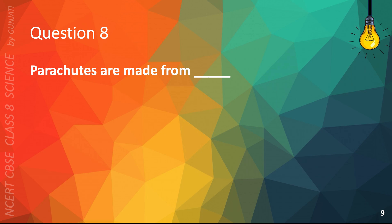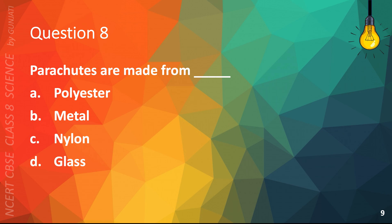Question 8. Parachutes are made from: A. Polyester, B. Metal, C. Nylon, or D. Glass. The correct answer is C. Nylon.